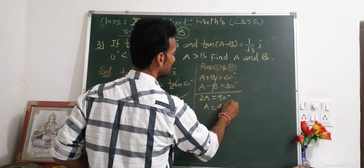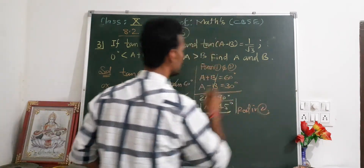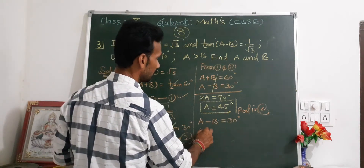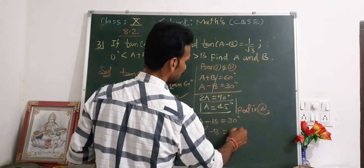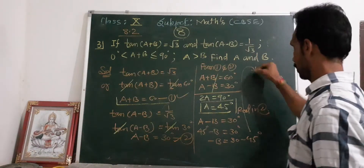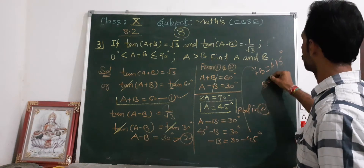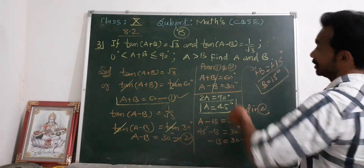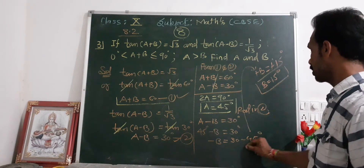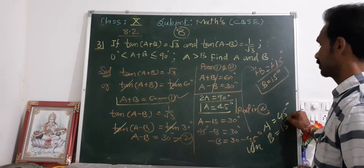So a equals 90 divided by 2, which gives a equals 45 degrees. Putting a equals 45 into equation two: 45 minus b equals 30, so minus b equals 30 minus 45, giving b equals 15 degrees. Checking the condition: a greater than b — 45 is greater than 15. Answer: a equals 45 degrees and b equals 15 degrees.